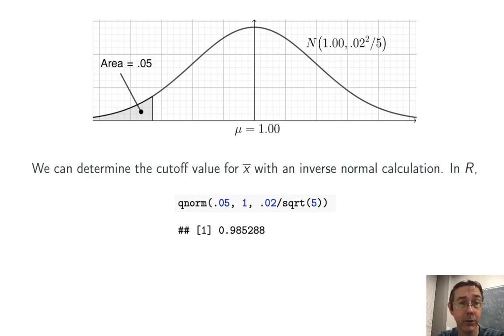In this case, we find that the cutoff value for that rejection region is going to be a mean fill level of 0.985288.